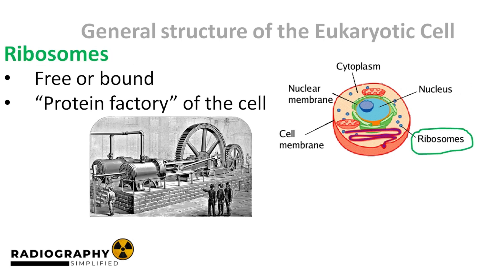Now, the ribosomes. There are two types of ribosomes found in a eukaryotic cell: free and bound. The free ribosomes float around on their own within the cell. The bound ribosomes are attached to another organelle called the endoplasmic reticulum, which we will talk about next. Ribosomes are the protein factory of the cell. The nucleus sends a sequence of mRNA to the ribosomes, and this mRNA sequence serves as blueprints which the ribosomes use to synthesize proteins within the cell.